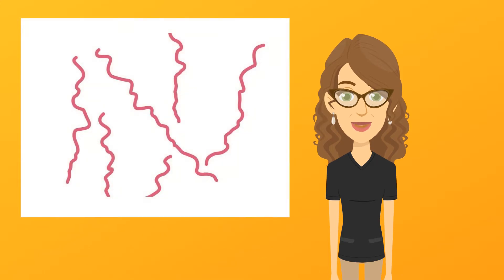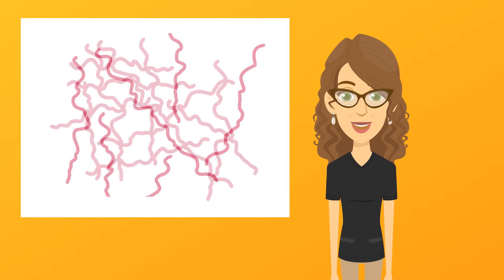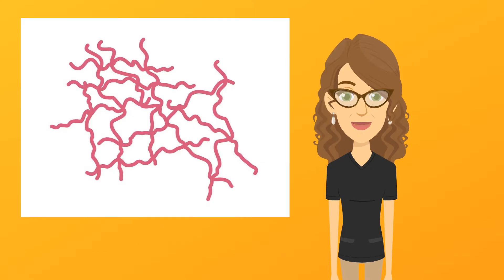The new shape allows individual protein strands to get together and form bonds with each other, forming a crisscross network. When this happens with eggs, they're changed from a liquid into a solid mass or gel that you can pick up with a fork. This transformation is called coagulation. The loner molecules have bonded together and formed a group — bless their hearts.